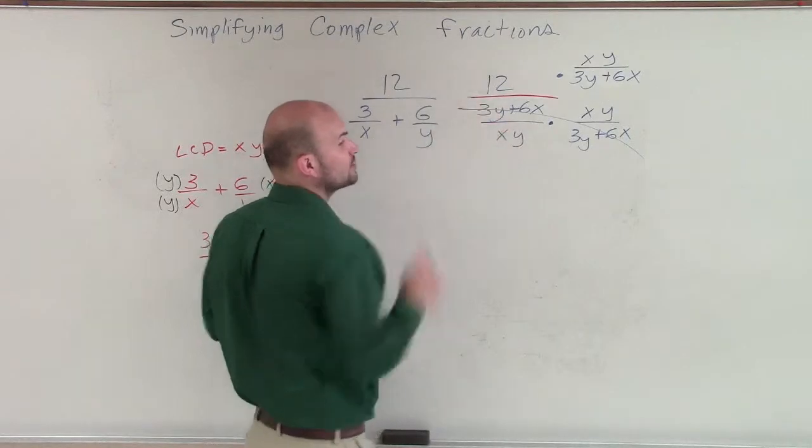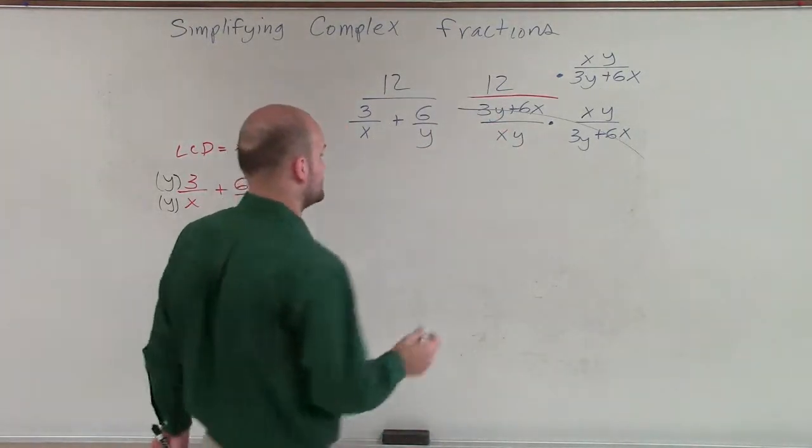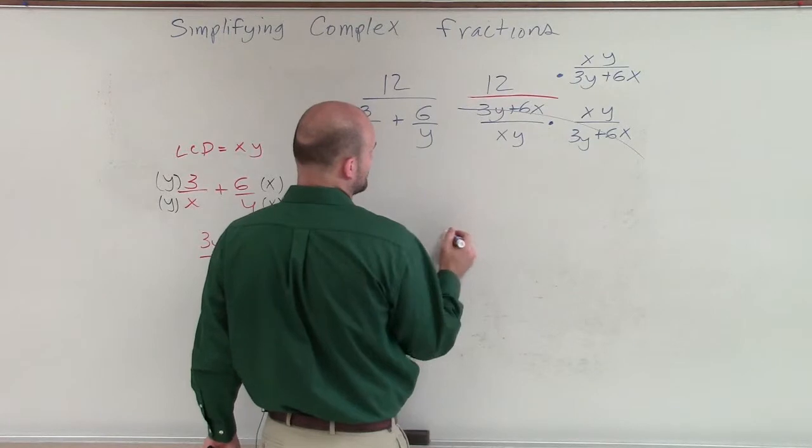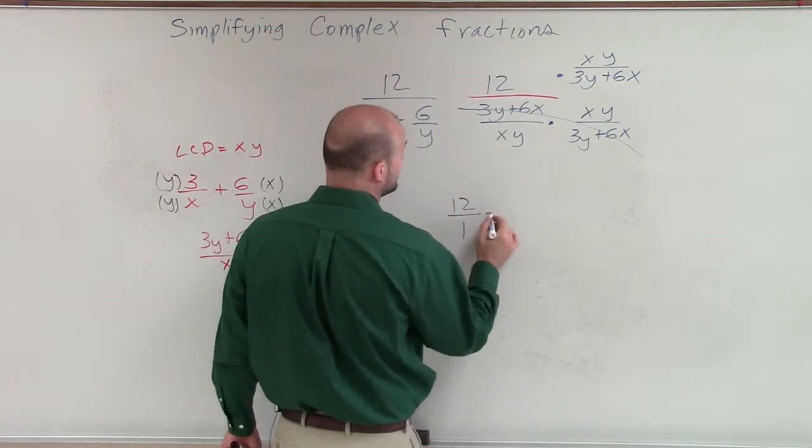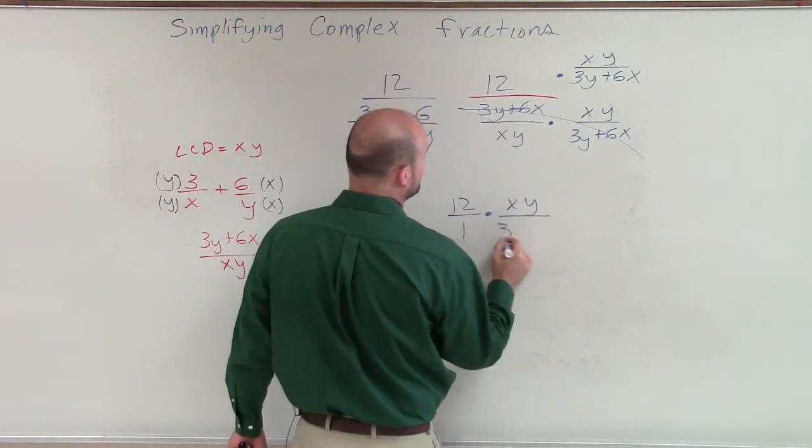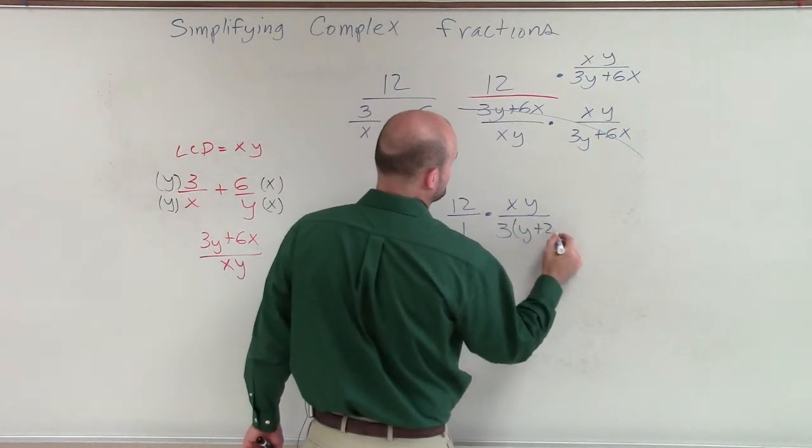And also, we notice that 12 is a whole number. But I can rewrite that as a fraction. So when I rewrite that as a fraction, I'll do this down below. I'll have 12 over 1 times xy divided by 3y plus 2x.